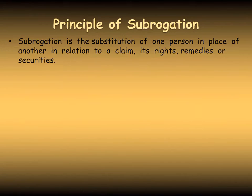अगर policy holder वो choice entertain करता है और insurance company से loss claim करता है, तो insurance company की responsibility रहेगी loss pay करने की. लेकिन insurance company loss pay करने के बाद, वो policy holder के जगे पे आएगी और policy holder के जगे पर आकर वो third party से — जिसके negligent act के वजे से loss हुआ था policy holder को — उससे वो loss claim करेगी. And that is called subrogation.